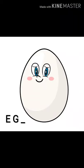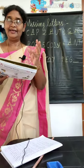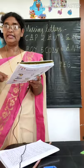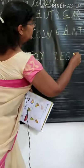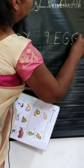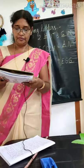The ninth one is EGG. E, G, dash — which is the missing letter? G. Write capital letter G. EGG.